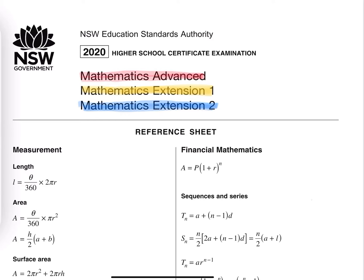First is measurement. This section is talking about the arc length and the area of a sector. I'm going to draw the sector here and label where L is — L is the arc length, R is the radius, and theta is the angle. For both the area and the arc length formulas, it's very important that theta is in degrees. Because if theta is in radians, we'll have different formulas. Don't get confused — for these two formulas, theta has to be in degrees.